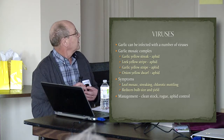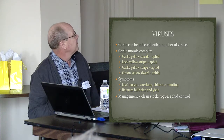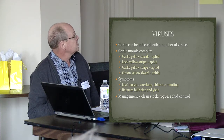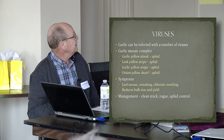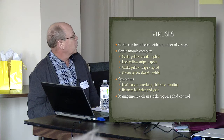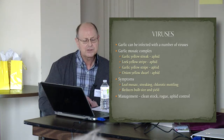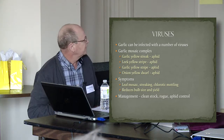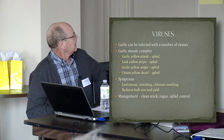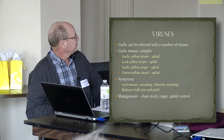The garlic mosaic complex is made up of garlic yellow streak, leek yellow stripe, garlic yellow stripe, and onion yellow dwarf. I have a few pictures of that on onion, but unfortunately I don't have any pictures of the viruses on garlic.